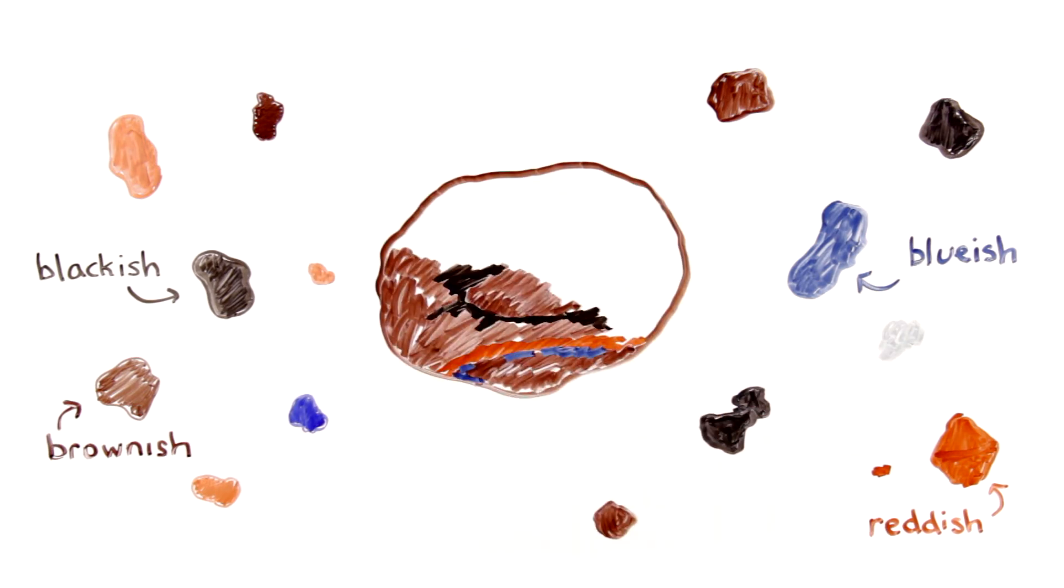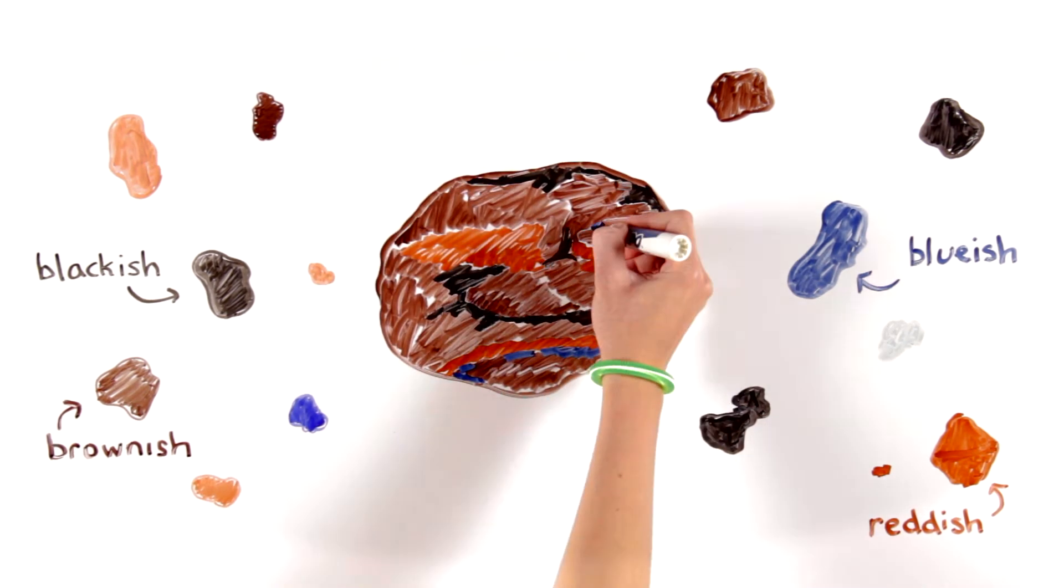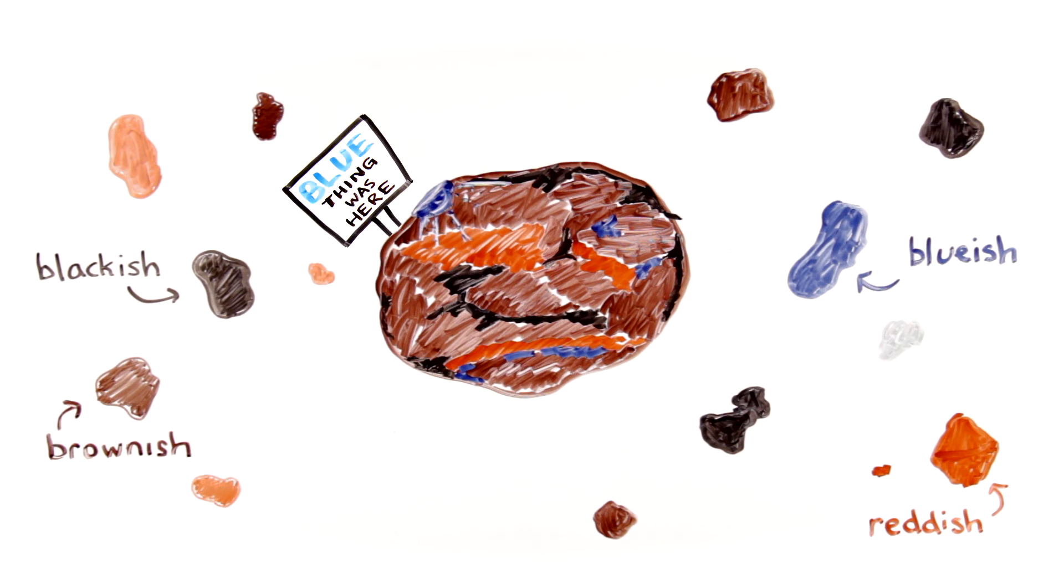For example, sometimes a single asteroid can have all sorts of these variations on its surface. A smudge of bluer material near a recent crater can help scientists figure out what sort of impactor made the crater, or maybe what sort of stuff is just beneath the asteroid's redder surface.